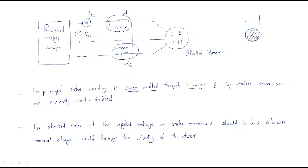In the slip ring induction motor, the rotor winding is short-circuited through slip rings, and in cage motors the rotor is inherently short-circuited. This is the meaning of the short circuit in the block rotor test of an induction motor.